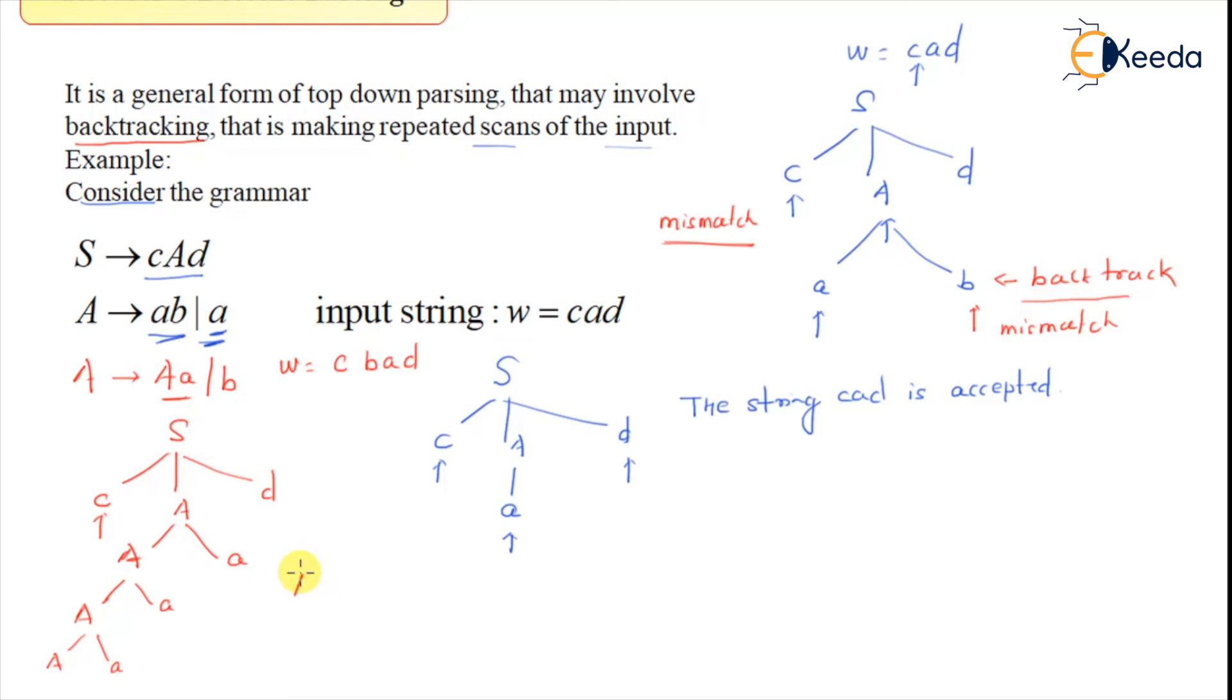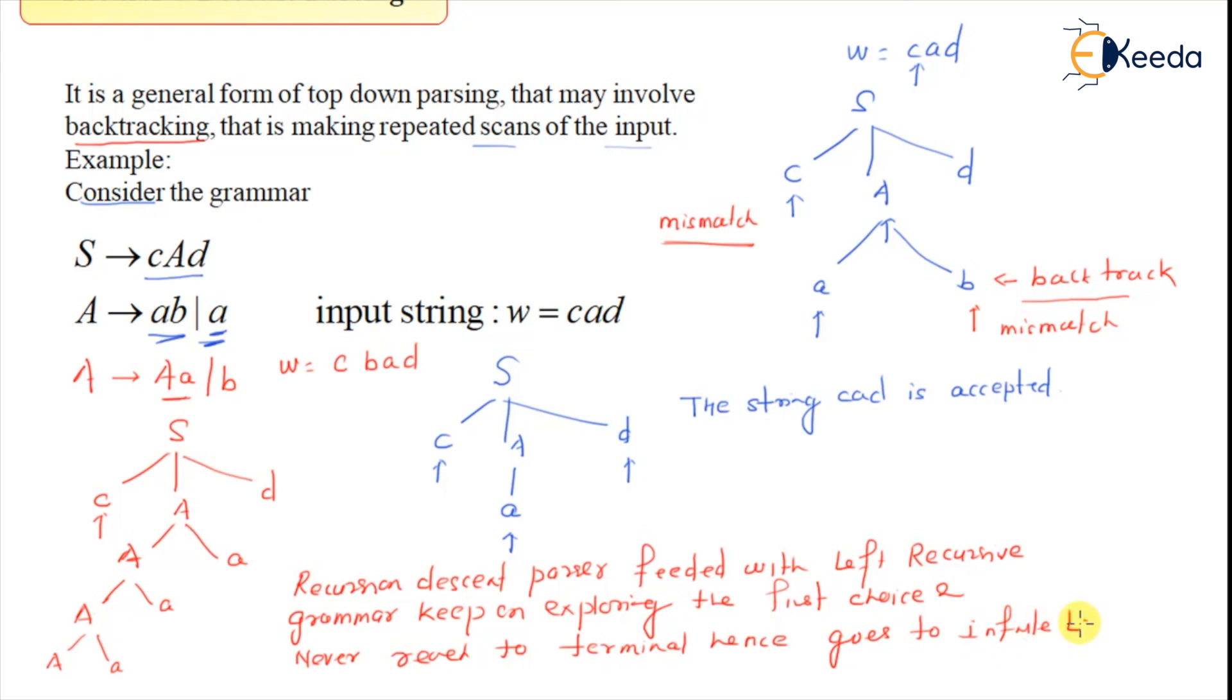So recursive descent parser with left recursive grammar, what will happen? Left recursive grammar keeps on exploring the first choice and never reaches to terminal. Hence goes to infinite loop.